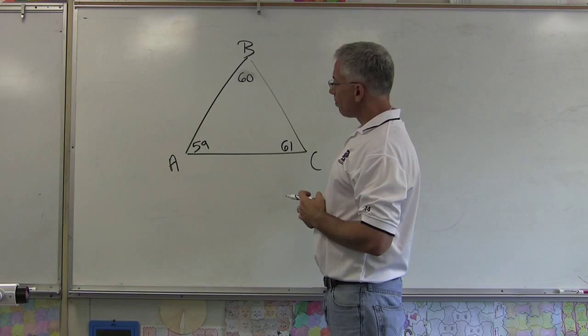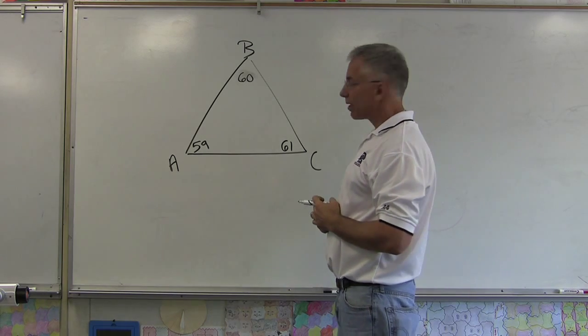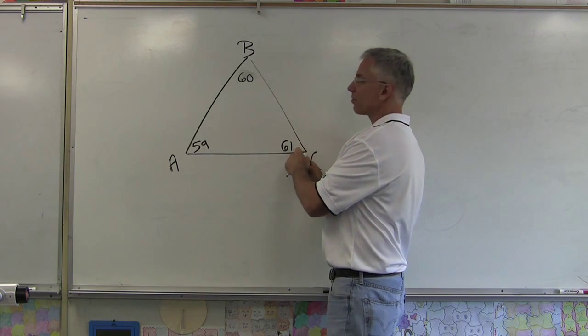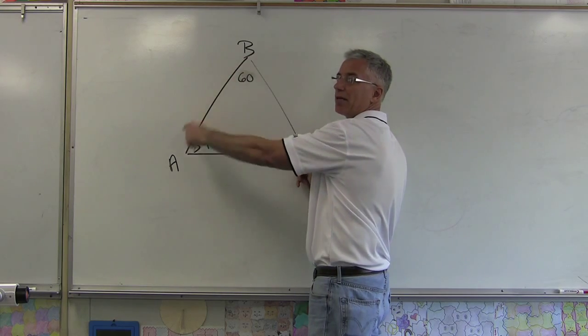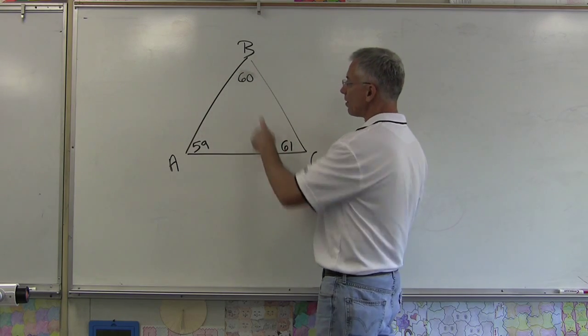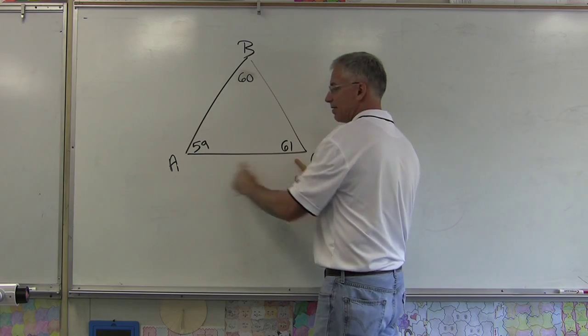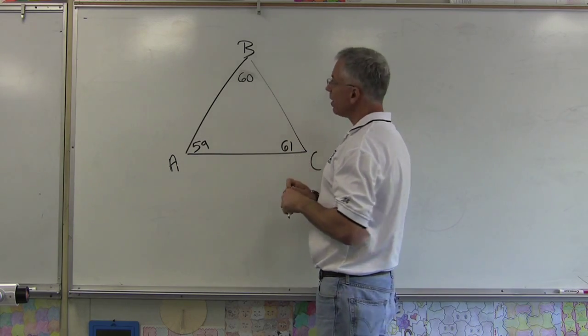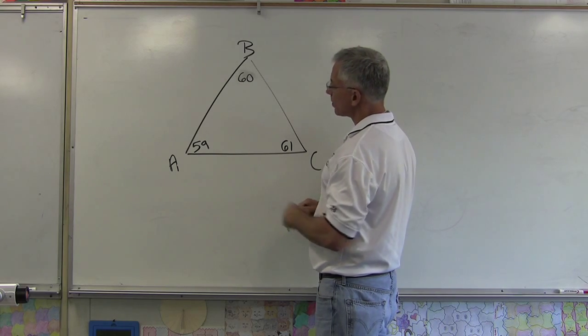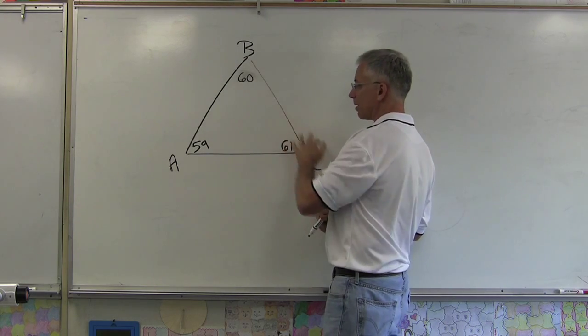And then the biggest side is going to be opposite the biggest angle. So here's the biggest angle in this triangle, which means side AB would be the biggest side. The medium angle is this one, so the side opposite that is side AC—that would be the medium side. And then the smallest side would be this side over here, side BC.